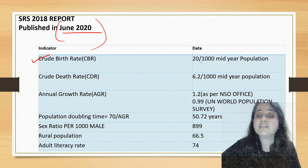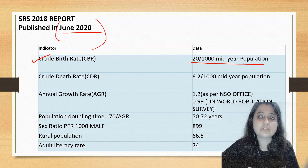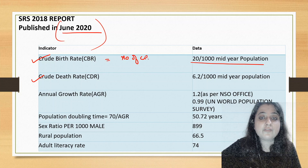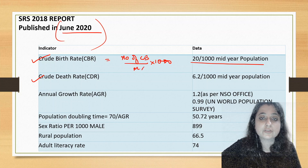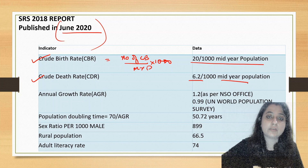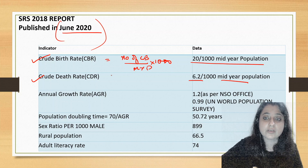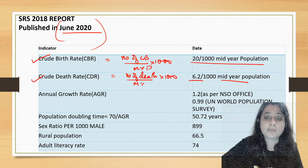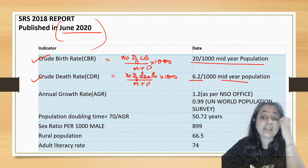The crude birth rate of our country is currently 20 per 1000 mid-year population. Crude birth rate is defined as the number of live births per 1000 mid-year population. Crude death rate is currently 6.2 per 1000 mid-year population, defined as the number of deaths per 1000 mid-year population.